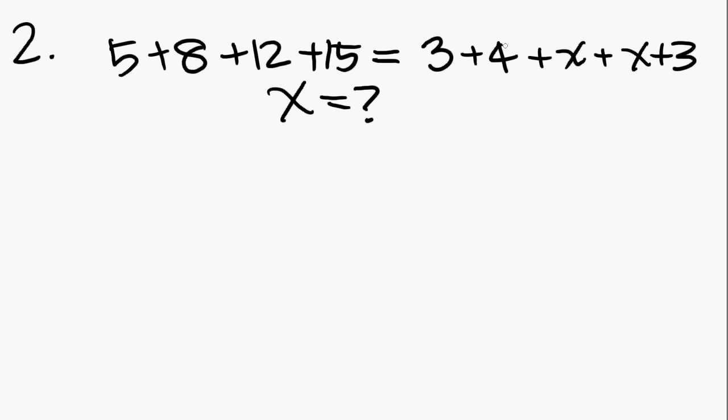Now this is pretty easy. You just take the numbers and get them on one side, leave the x's on the other side, and then divide. So first, add together the numbers on the left. You got a 5 and a 15, that's 20. You got an 8 and a 12, that's another 20. 20 plus 20, you get 40 on the left.